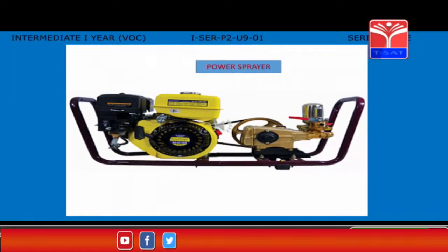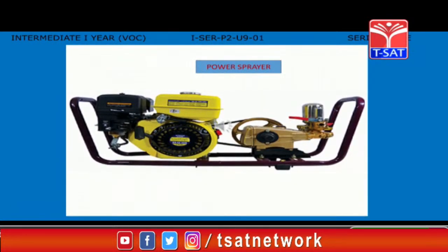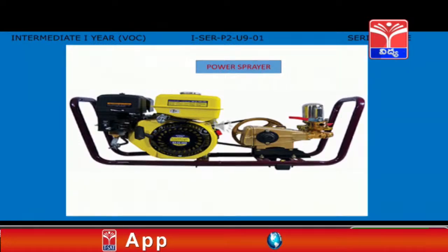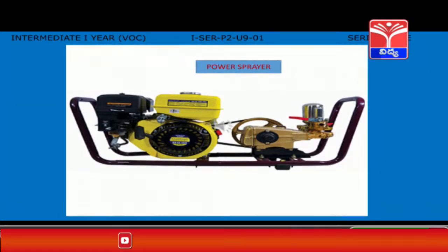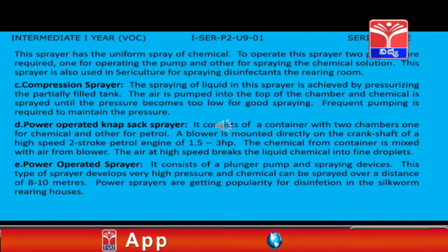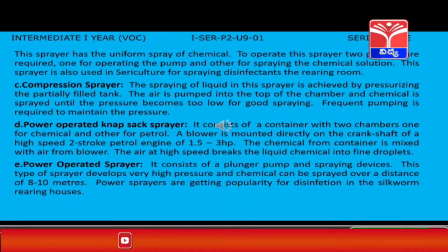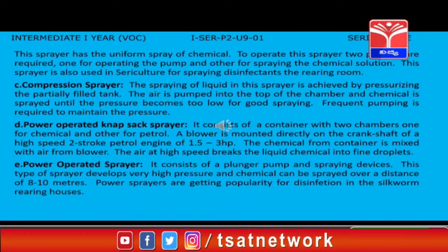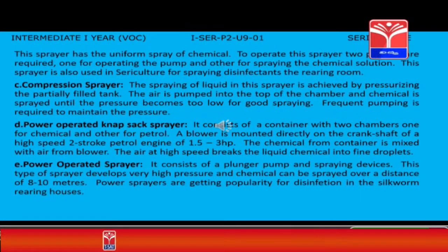Power sprayer: A power sprayer consists of a plunger pump and spraying devices. This type of sprayer develops very high pressure and the chemical can be sprayed over a distance of 8 to 10 meters. Power sprayers are getting popular for disinfection in silkworm rearing houses. This sprayer has uniform spray of chemical and requires two persons to operate — one for the pump and one for spraying the chemical solution. It is also used in agriculture for spraying disinfectants in the rearing room.